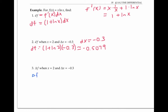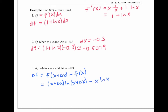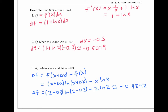Now delta f is defined as f of x plus delta x minus f of x. So for our function, that's x plus delta x times ln of x plus delta x, minus x times ln x. Plugging in the given values for x and delta x, we get delta f equals two minus 0.3 times ln of two minus 0.3, minus two ln two, which according to my calculator is negative 0.4842. We see that the change in the function between two and two minus 0.3 is closely approximated by the change in the tangent line, as expected.